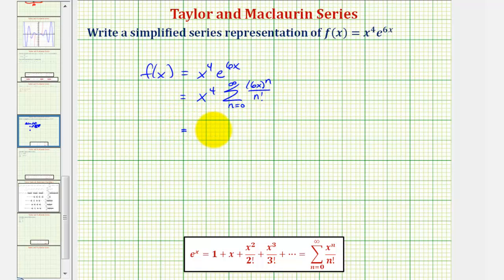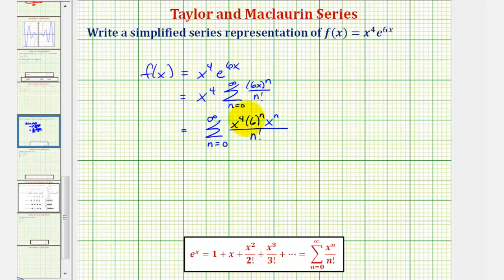Now let's simplify this. We write this as the summation from n equals zero to infinity of x to the fourth times six to the nth times x to the nth divided by n factorial. Notice how here we have a common base of x. We multiply x to the fourth times x to the nth, we would add the exponents, so our simplified series is the summation from n equals zero to infinity of six raised to the power of n times x raised to the power of n plus four divided by n factorial.